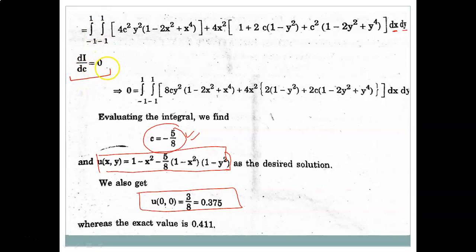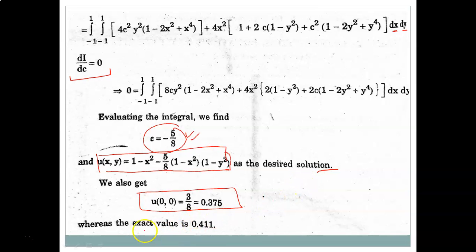Setting dI/dc = 0 for the extremum and evaluating, we get c = −5/8. Consequently, the approximate solution is u = (1 − x²) − (5/8)(1 − x²)(1 − y²). Evaluating at x = 0, y = 0 gives u(0,0), but we leave the approximate solution in this form and are not concerned with the exact solution here.